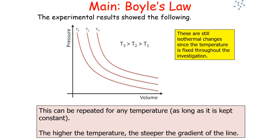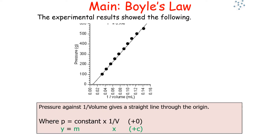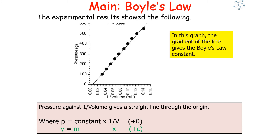We can also plot pressure against one over volume, which gives a straight line through the origin. In the form y equals mx plus c, P is the value for y, 1 over V is the value for x, with the constant as m. The gradient of this line gives you your Boyle's law constant.